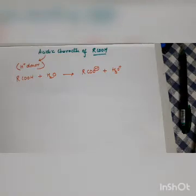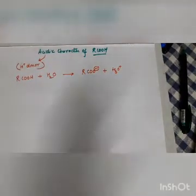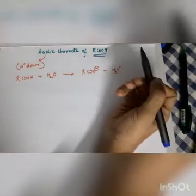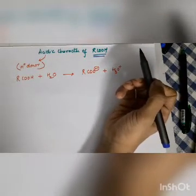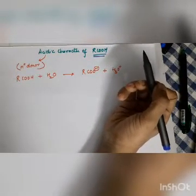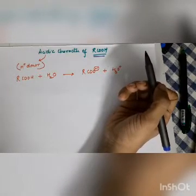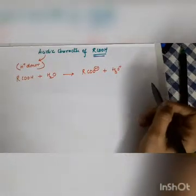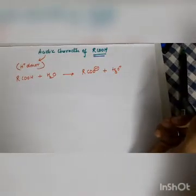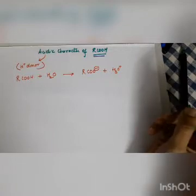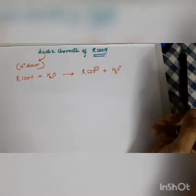Good morning class. Today's agenda is talking about the acidic character of carboxylic acids. This is part of your chapter on aldehydes, ketones and carboxylic acids — unit number 12, volume 2, NCERT. You're watching the channel by Seema Makhijani. Hope you are enjoying the classes. Please keep subscribing, liking and sharing with other students.